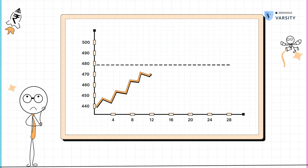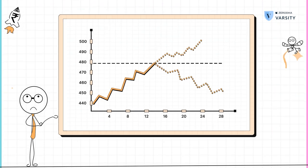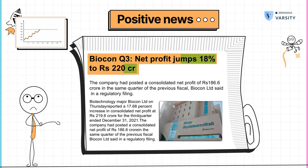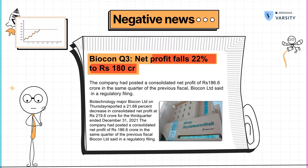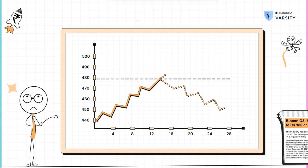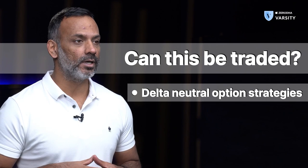Imagine a situation where you don't have clarity on which direction the stock will move. For example, assume Biocon will announce its quarterly results tomorrow. If the results are good, then the stock price will rally. But if the results are bad, the stock price will crack. Clearly, there is no directional visibility here. Just because there is no directional visibility does not mean there is no trade here. We know that the stock price will move — it's just that we don't know in which direction. Options enable you to trade such situations where there is no clarity on the directional movement of a stock.